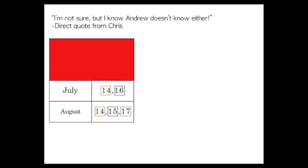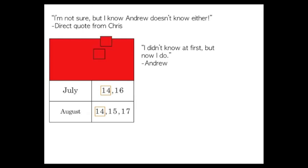Andrew is going to know this based on what Chris said. So now he says, I didn't know at first, but now I do. If we look at the remaining possible days, it can't be 14, because if she had whispered 14 in his ear, there would still be two possible days it could be. So Andrew wouldn't know. Since he's telling us he does know, we can eliminate 14.